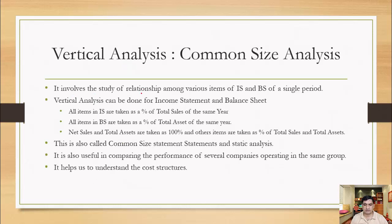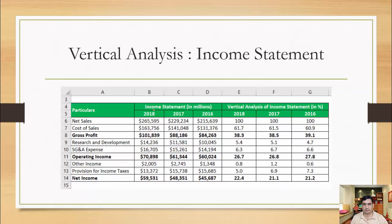Vertical analysis involves the study of the relationship between various items of the income statement and balance sheet of a single period. Let me take you to the example. What we are doing here — let's take 2018 — we are calculating each item of the income statement as a percentage of net sales. Net sales is taken as 100 percent and we are calculating each item of the income statement as a percentage of sales.